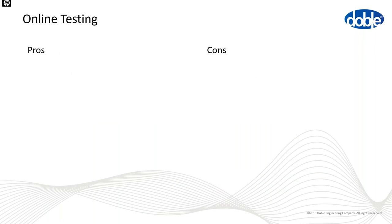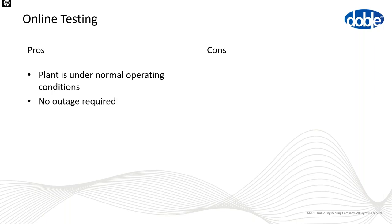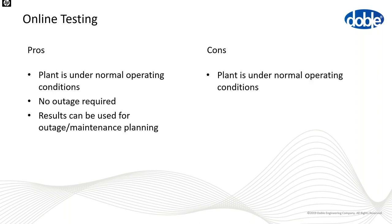Online testing has pros and cons. A key pro is that the plant is tested under normal operating conditions, so we see it as it is most of the time — no outages required, and results inform outage and maintenance planning. The cons: the plant is under normal operating conditions, meaning all external noise that could interfere with measurements is present. There is also a limited set of measurements we can actually perform online.